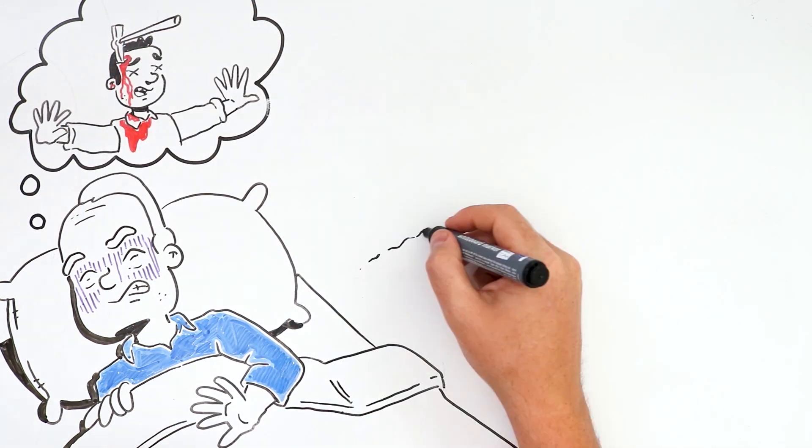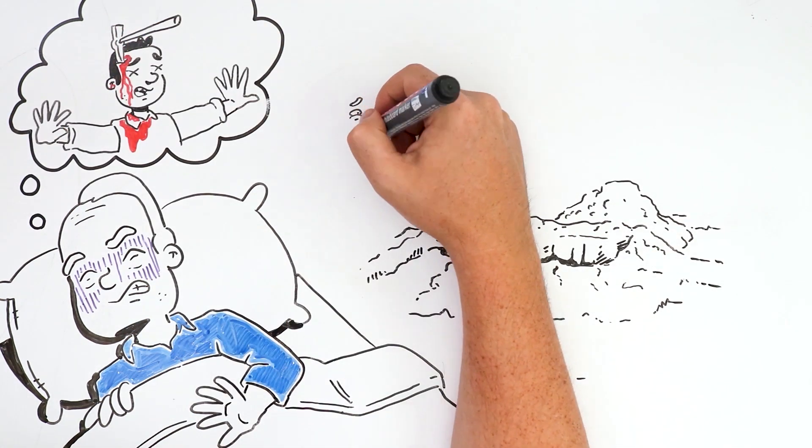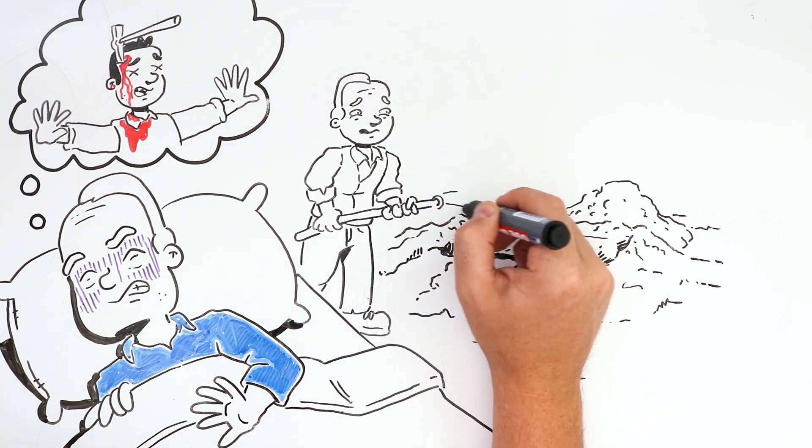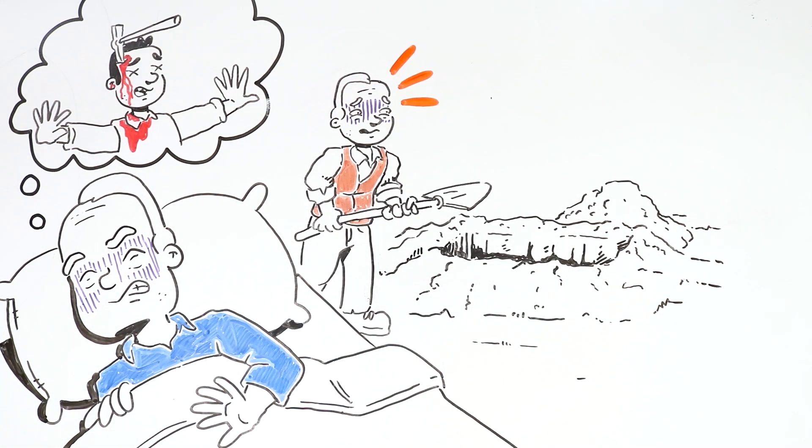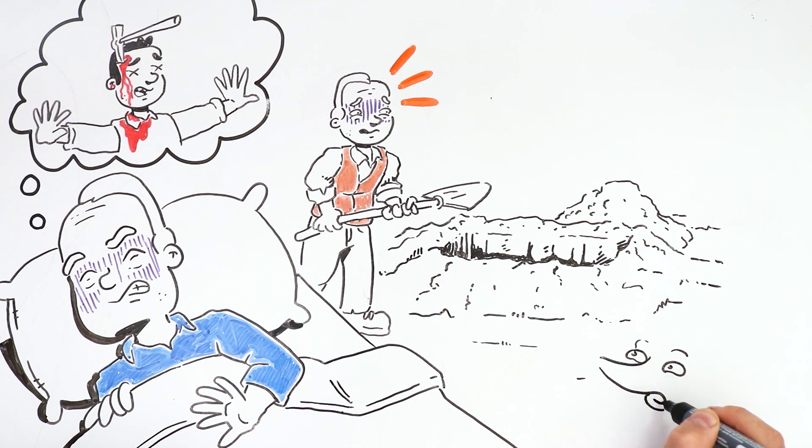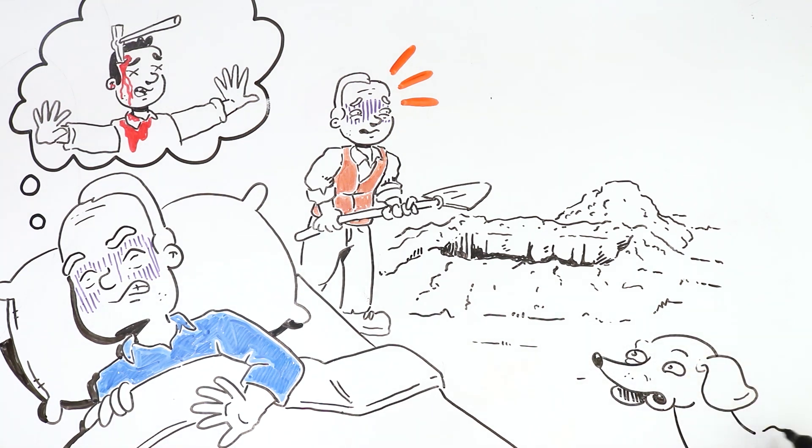One morning, he couldn't take it anymore, and ran to his garden to unearth the corpse. He had to get rid of it. Once he finished unearthing it, he looked at his side and saw a hungry stray dog that managed to get into the garden, and the dog was looking directly at the farmer, as if judging him.